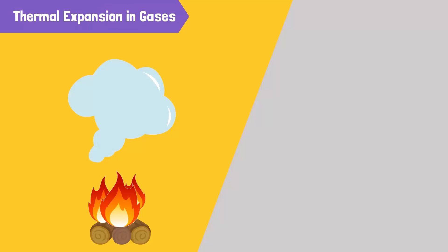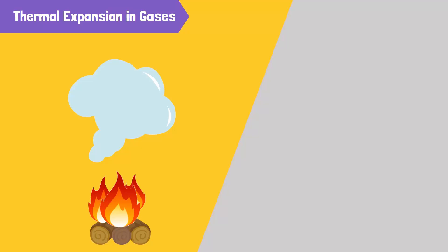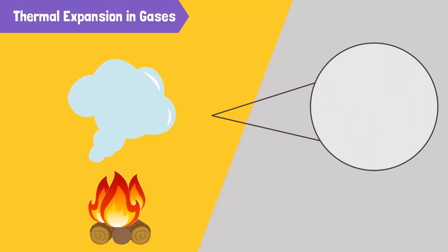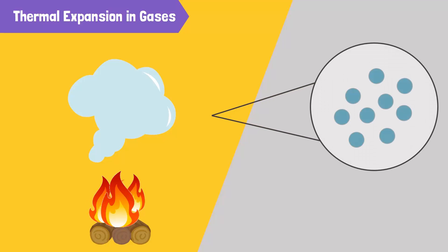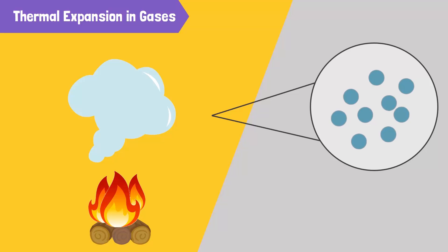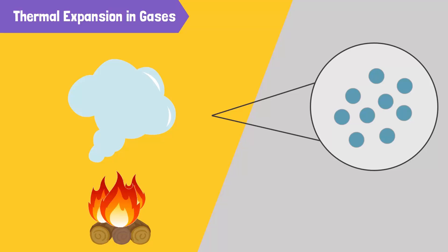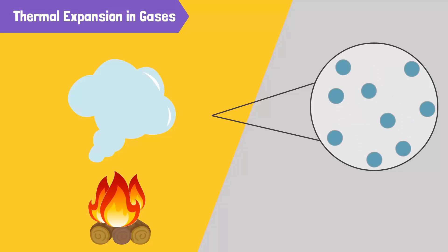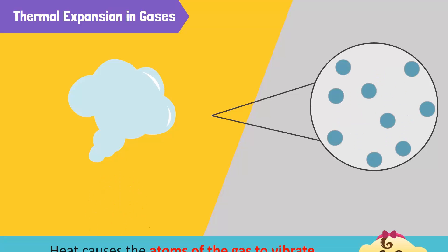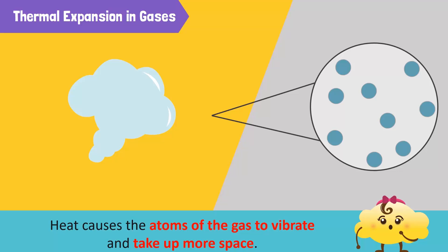Finally, let's see how gases react when they are heated. Gases expand the most when heated. This is because gas particles are far apart and are weakly attracted to each other, making it much easier for them to move further than solid or liquid particles when heated. Heat causes the atoms of the gas to vibrate and take up more space.